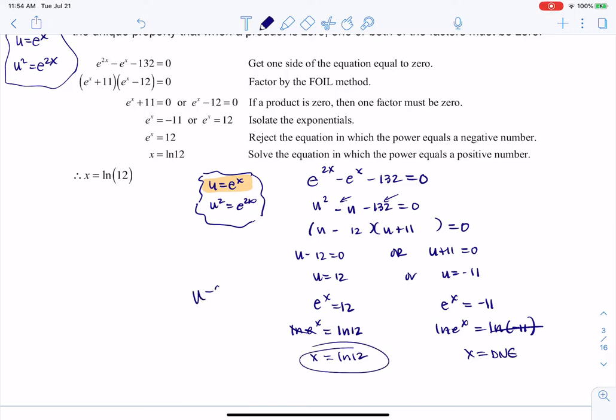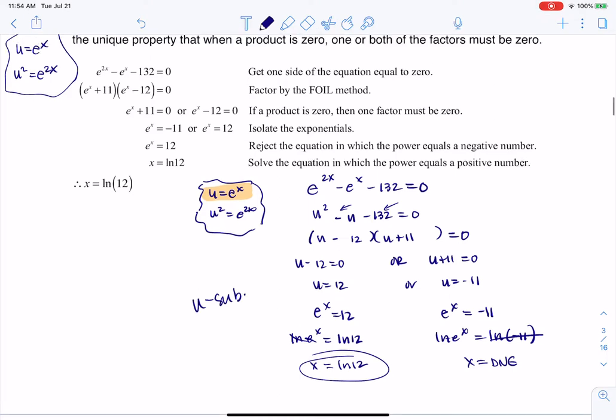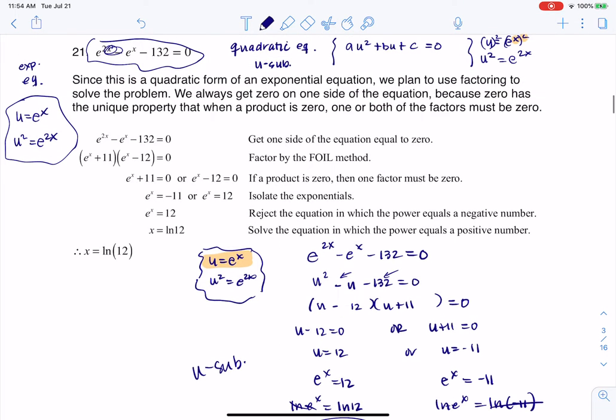Now this was the u sub way. And when you become more comfortable with factoring, like if you recognize right out the gate that you've got a 2x and an x situation here, you can actually go ahead and directly factor it if you want to. It just depends on how comfortable you are with things like that. But you ultimately get to the same position, because the answer is ln of 12.